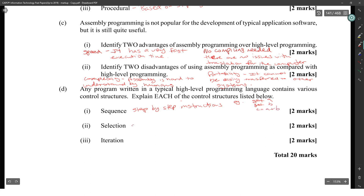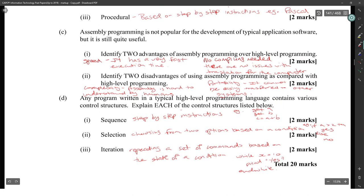Selection is choosing from two options based on a condition. Example: if a is greater than 2 then yes, else no. Iteration is repeating a set of commands based on the state of a condition. Example: while x equals 10, print yes. And that's it for Module 3.